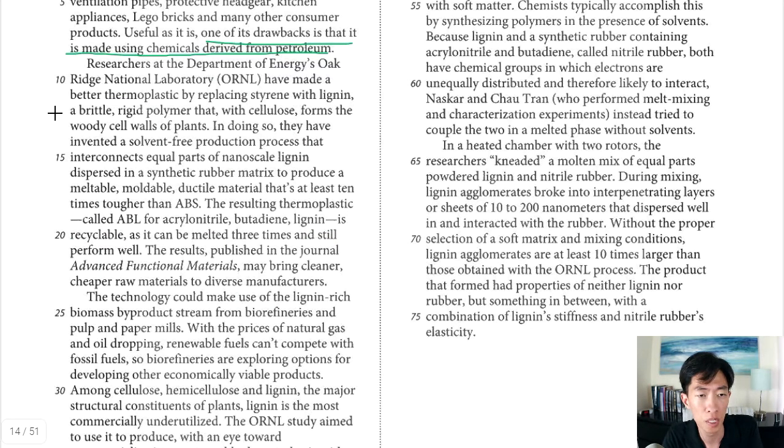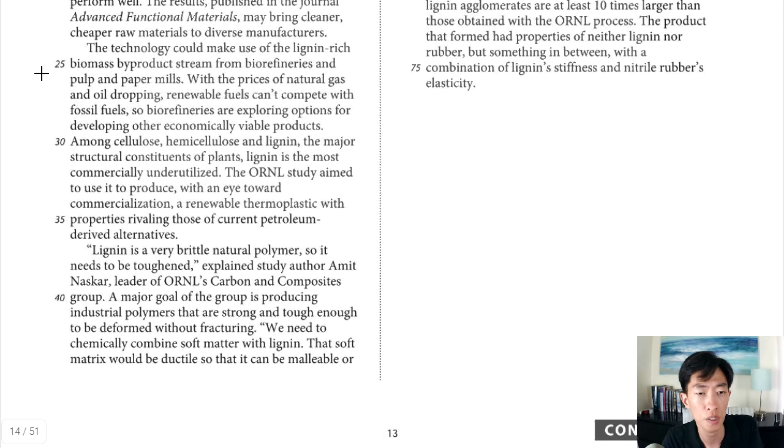Now in the second paragraph they're going to talk about this new material that they made. It says researchers at the Department of Energy Oak Ridge National Laboratory have made a better thermoplastic by replacing styrene with lignin. That was one of the ingredients for the old thermoplastic. And it's described as a brittle rigid polymer that with cellulose forms the woody cell wall of plants. What's good about this? Line 14 they say it's solvent free and it produces a meltable moldable ductile material that's at least 10 times tougher than ABS. So the new one is ABL, the old one is ABS. The resulting thermoplastic called ABL is also recyclable.